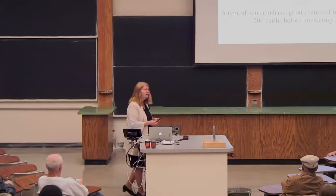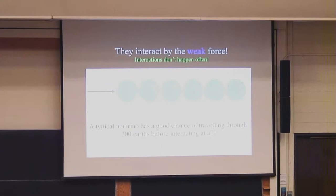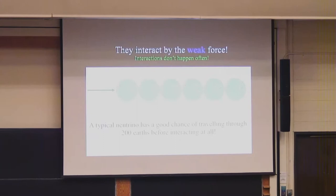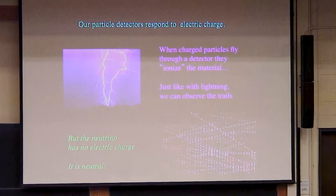Neutrinos are all around you all the time, but you don't know them because unlike the electron, the interaction of the neutrino is very rare — we call it the weak force, and we call it weak for a reason. Interactions simply don't happen very often. A typical neutrino coming from the Sun has a very good chance of traveling through 200 Earths before it interacts at all.